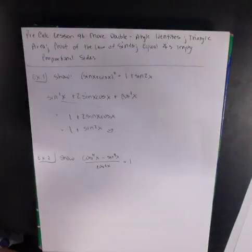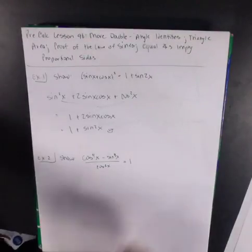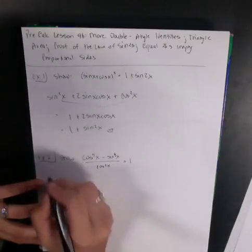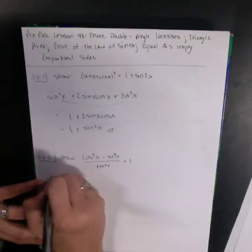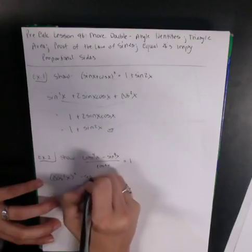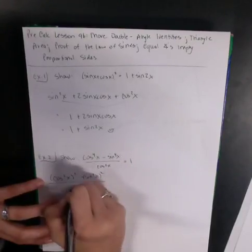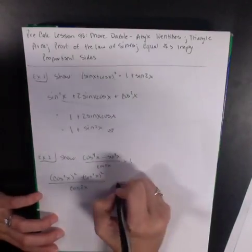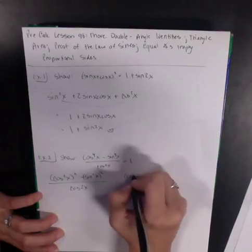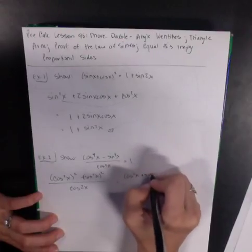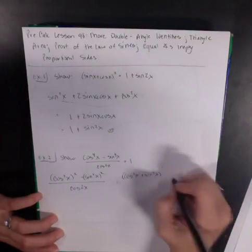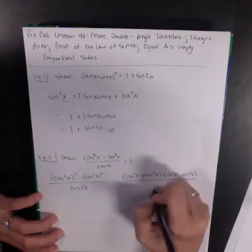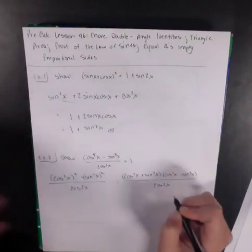Let's do another example. We have cosine to the fourth x minus sine to the fourth x, all over cosine of 2x, equals 1. First I'm going to rewrite the numerator as (cosine squared x)² minus (sine squared x)², and I can factor this as (cosine squared x + sine squared x)(cosine squared x − sine squared x), all over cosine of 2x.